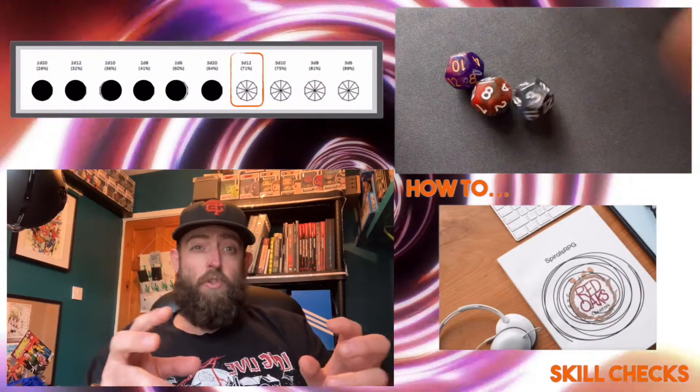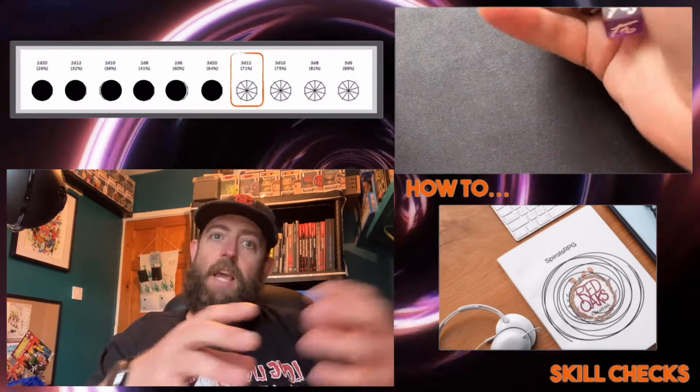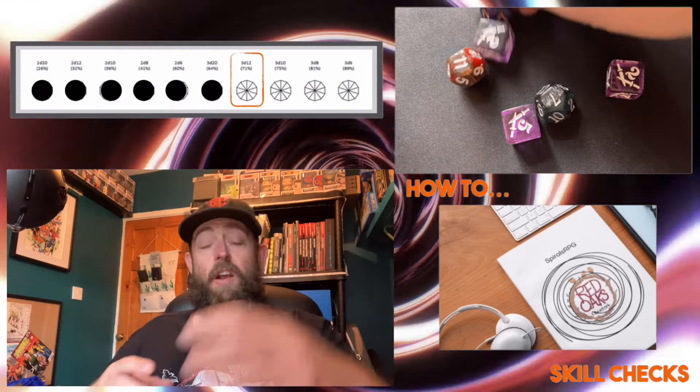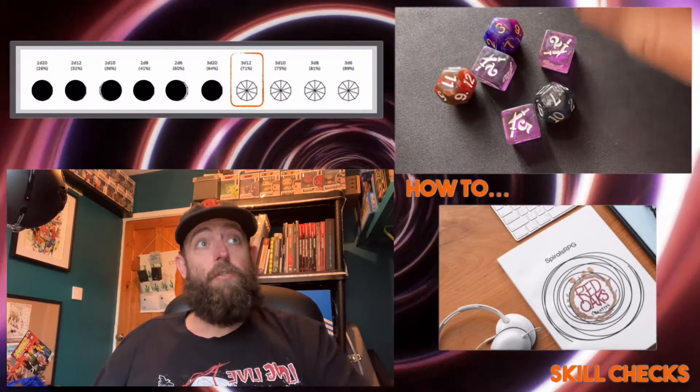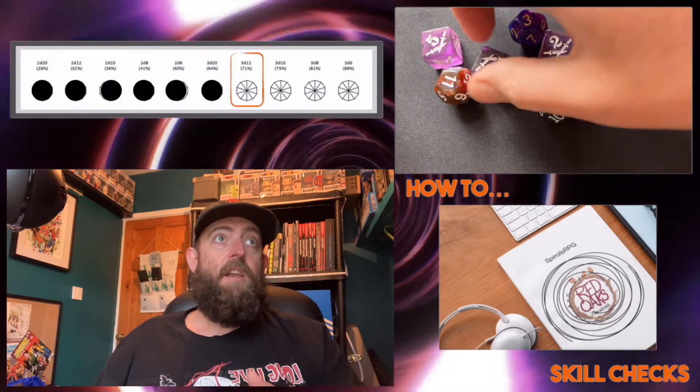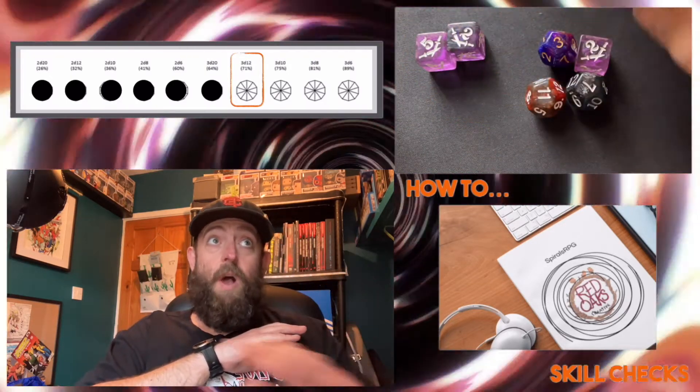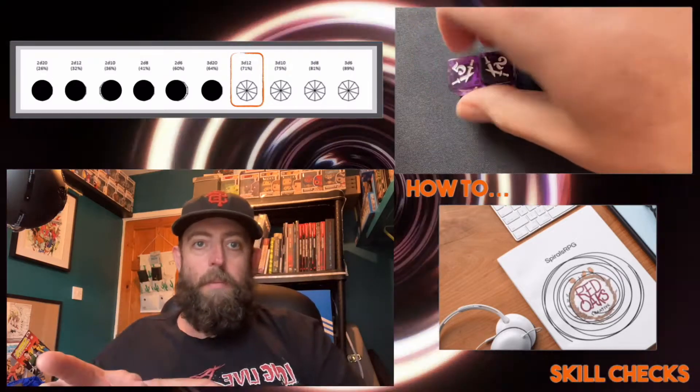Once the character gets even stronger, they start rolling with three dice instead of two, and you get three key dice as well. Here, I'm rolling 3d12 and 3d6. I manage to get one success from my 5 and my 2. The 7 on the d12 doesn't count because it has to be a combination of dice.